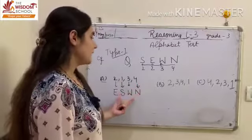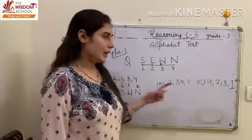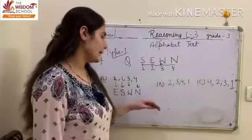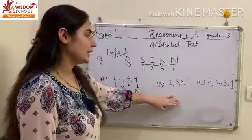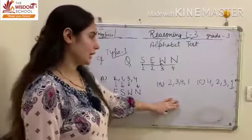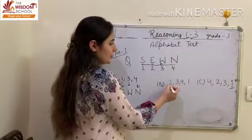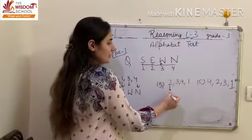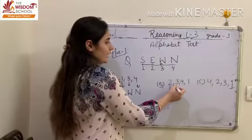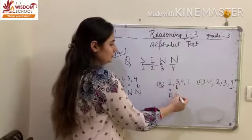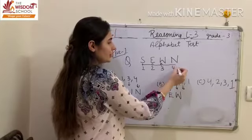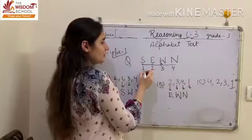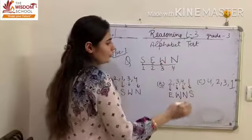Now, firstly, we will write the letters for each number. हम A option, B option और C option तीनों options के अंदर हम पहले numbers के लिए उनके particular letters को लिखेंगे. So, अब हम यहां number 2, option B में start करेंगे. Number 2 पे है बच्चो E. Then, number 3 पे है W. Number 4 पे चिल्ड्रन N. And number 1 किसको दिया हमने? S को.